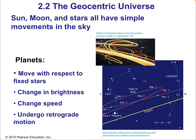The sun, the moon, and the stars all have simple movements in the sky. But notice what doesn't have simple movements: the planets. The planets move with respect to the fixed stars, as do the sun and moon, but on a much more gradual basis. Planets change in brightness more dramatically — there are times of the year they're just not visible at all. They change in their speed — how much distance they cover in a given night. And here's the weirdest thing: they undergo retrograde motion.